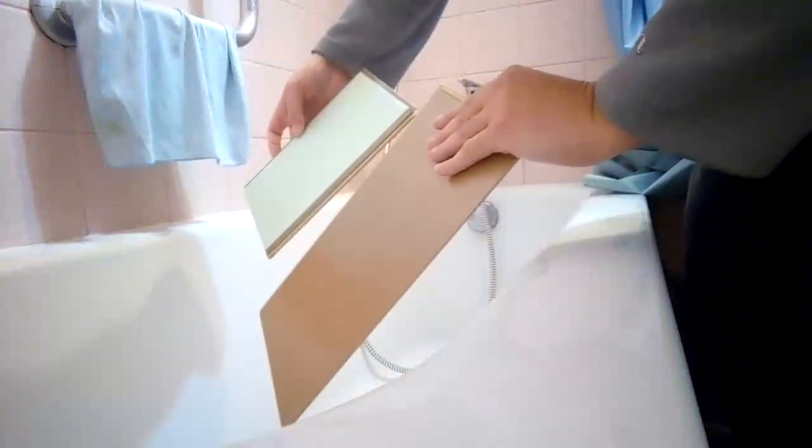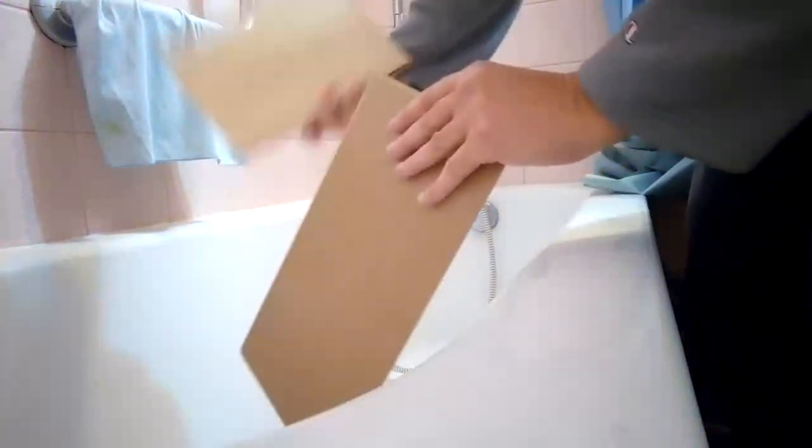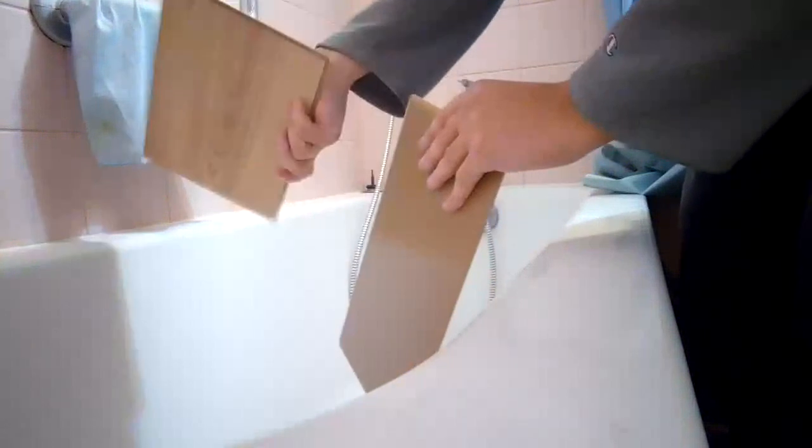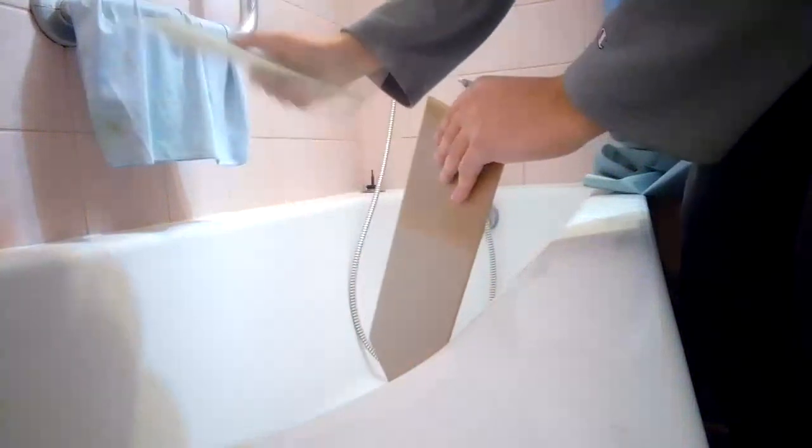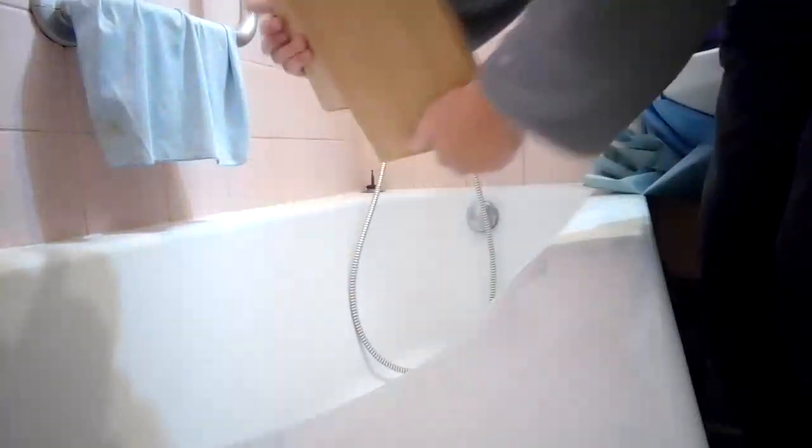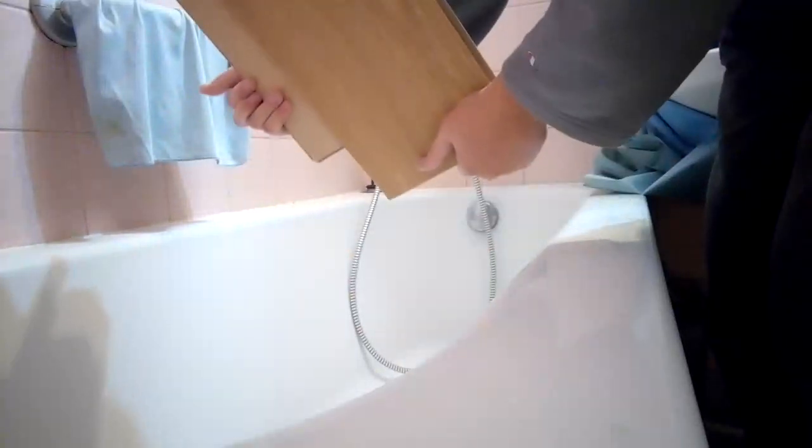Two types of laminate floor: a German one, six millimeters, and an Austrian one, I think it's seven millimeters.